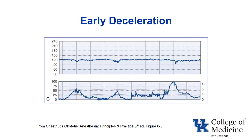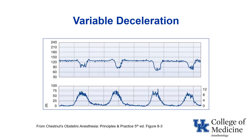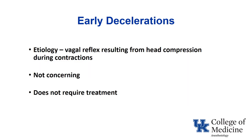This is an example of early decelerations, variable decelerations, and late decelerations. On board exams, they won't just ask you to identify the type — they'll ask what's causing it. Early decelerations result from a vagal reflex due to head compression during contractions, which is why they mirror the contraction. They're not concerning and don't require any treatment.